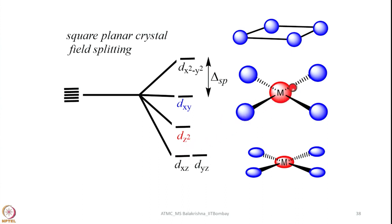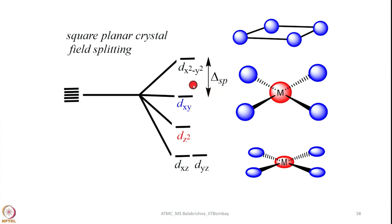On the other hand, 4 ligands are coming along the xy plane, so d_x²-y² will have higher energy. Then d_xy has partial overlapping and has slightly lower energy compared to d_x²-y². This is the typical crystal field splitting diagram for square planar complexes.